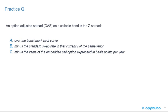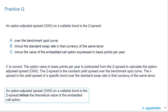Another quick practice question: An option adjusted spread, OAS, on a callable bond is the Z spread A, over the benchmark spot curve; B, minus the standard swap rate in that currency of the same tenor; or C, minus the value of the embedded call option expressed in basis points per year. The answer is C. The option value in basis points per year is subtracted from the Z spread to calculate the OAS. The Z spread is the constant yield spread over the benchmark spot curve, and the I spread is the yield spread over the standard swap rate.